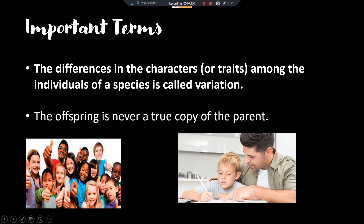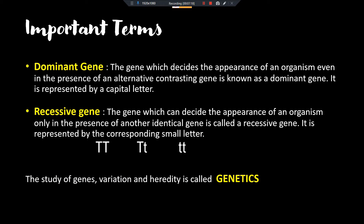Now the next terms: dominant gene and recessive gene. We represent height with T and t — both capital T meaning tall, one capital and one small, and both small t representing short. Capital T represents tallness and small t represents shortness. Dominant gene: the gene which decides the appearance of an organism even in the presence of an alternative contrasting gene is known as a dominant gene. It is represented by a capital letter.